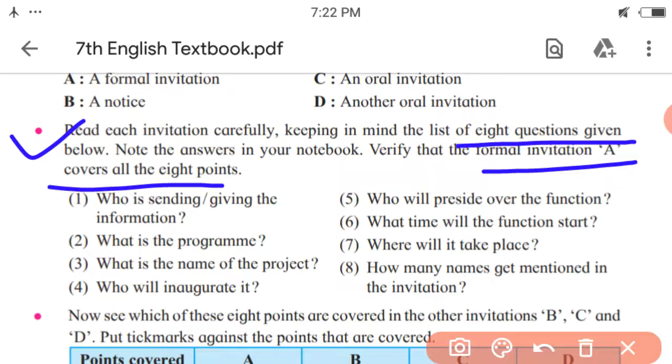So first of all, you have to write the answer of each question given over here. And later on, you have to think of whether all these points are covered in the first type of invitation, that is formal invitation. Let us see question first. Who is sending or giving the information? So what is the answer thinking of the first invitation? That is, Suhasini Ambakar, V.S. Ajinkya, Komal Shalar and Nitin Valkai.